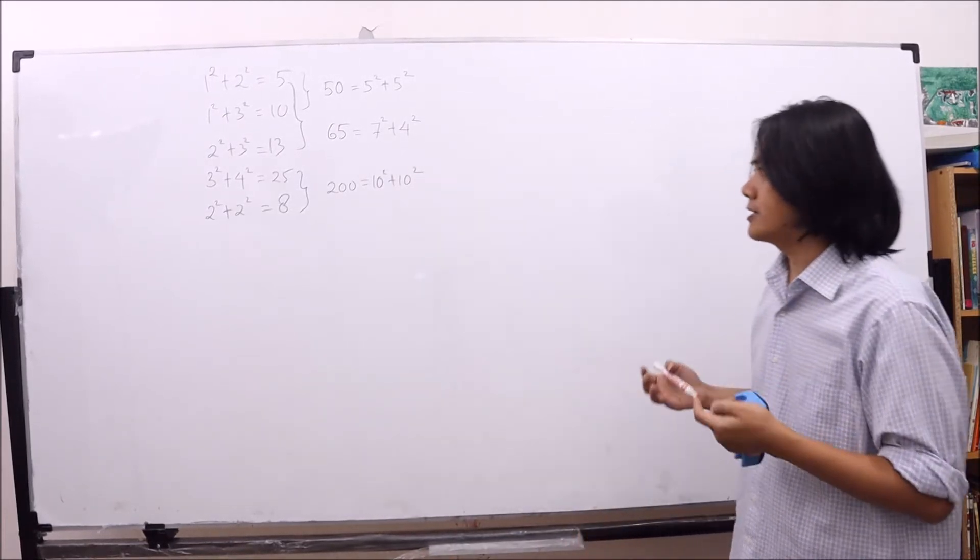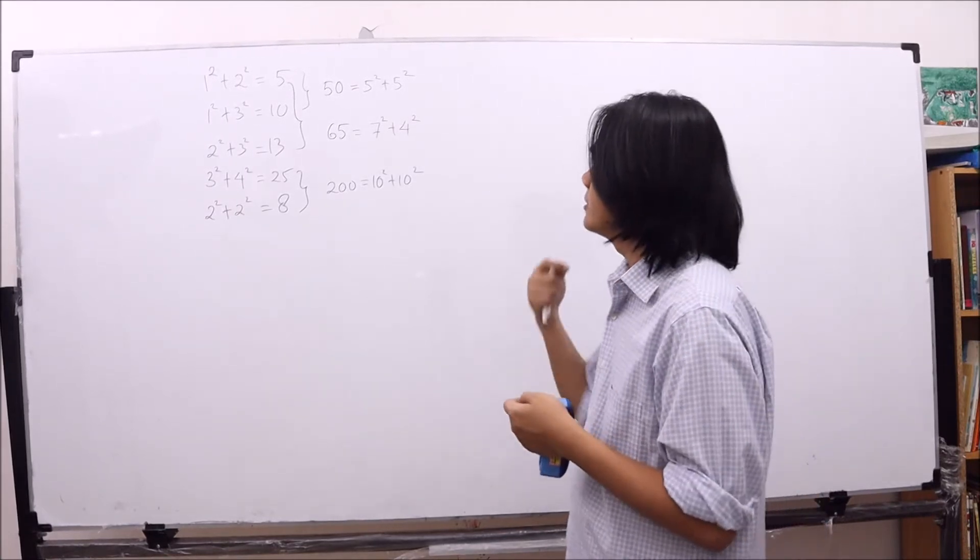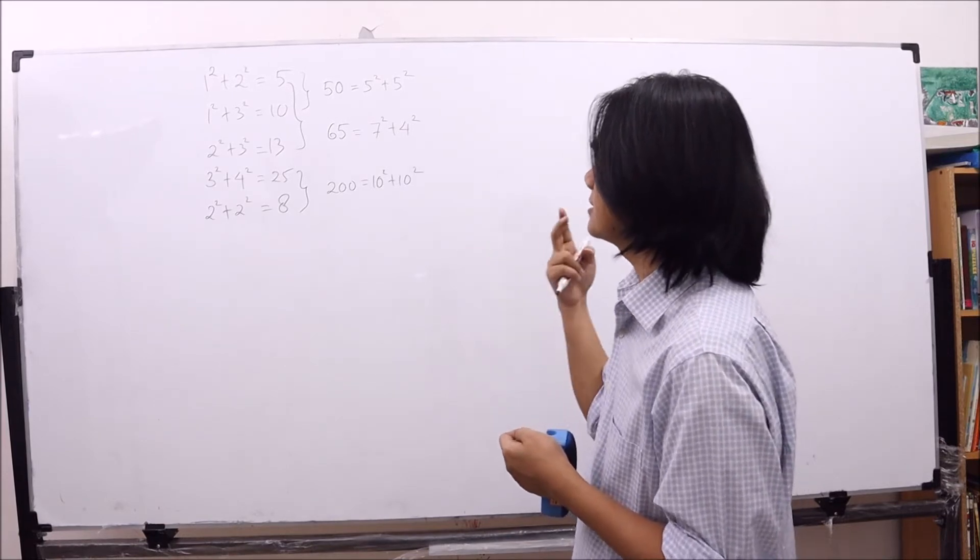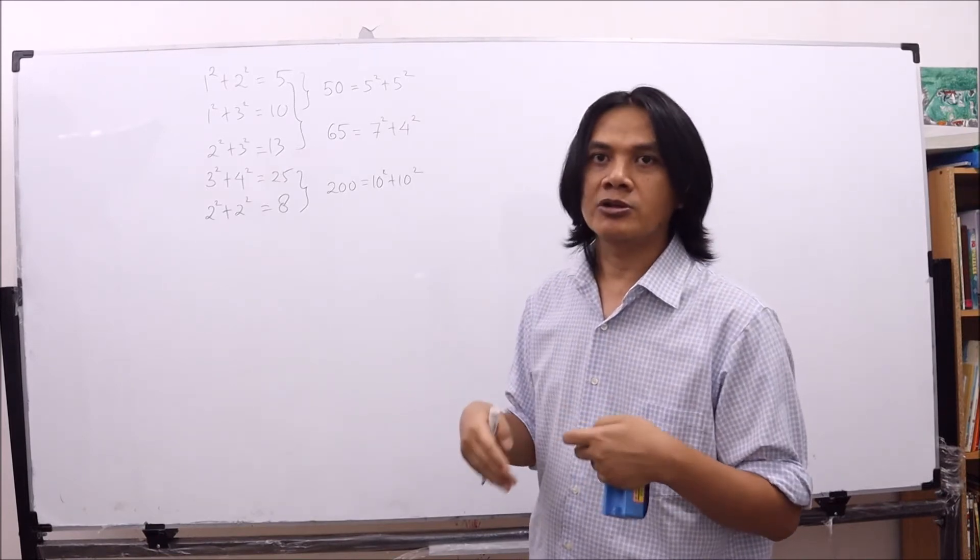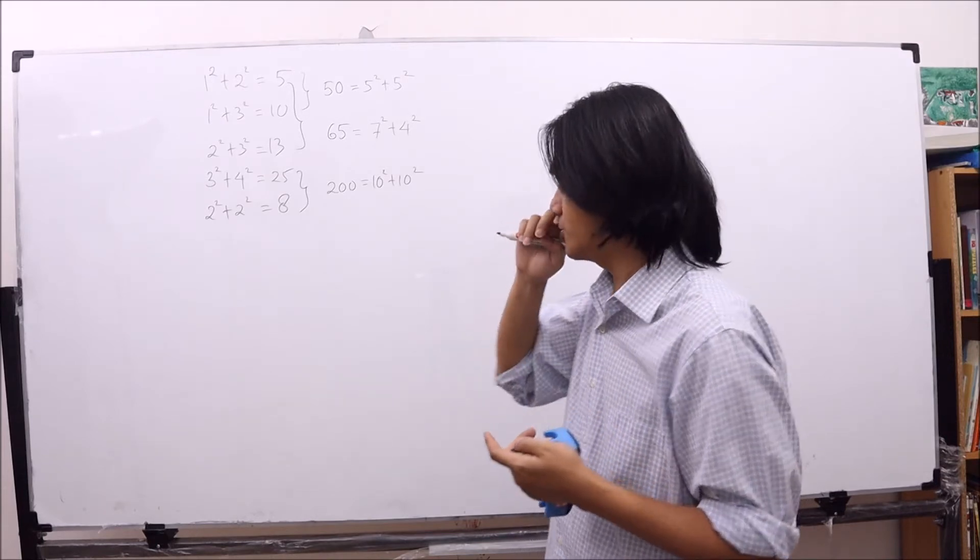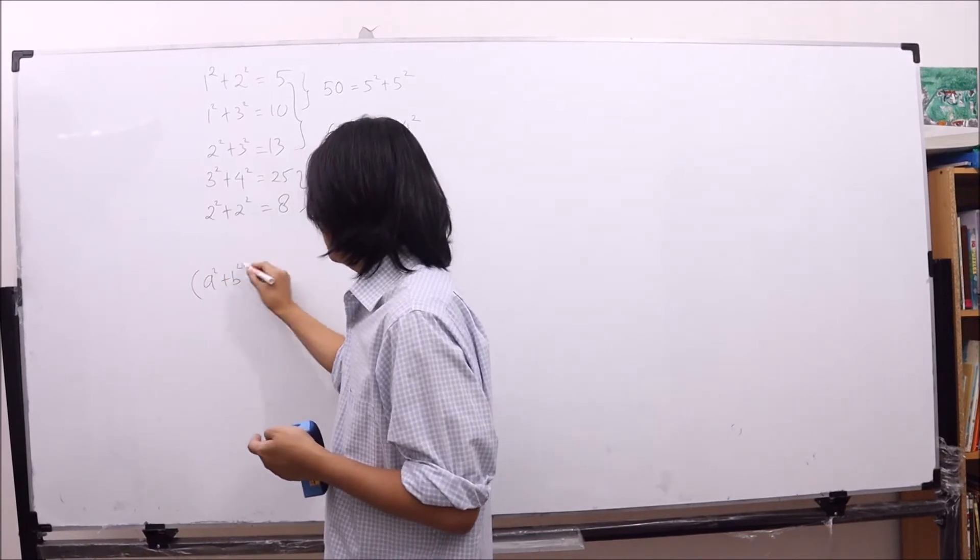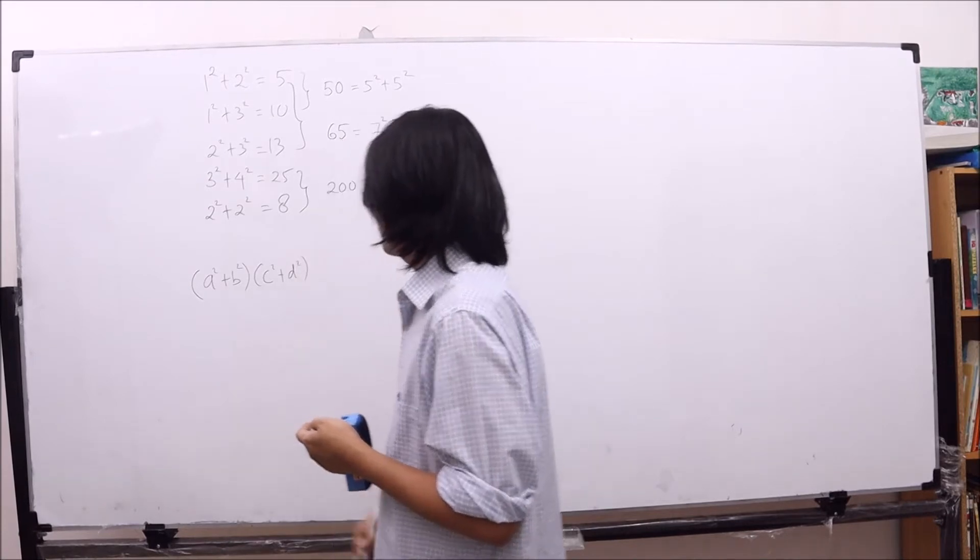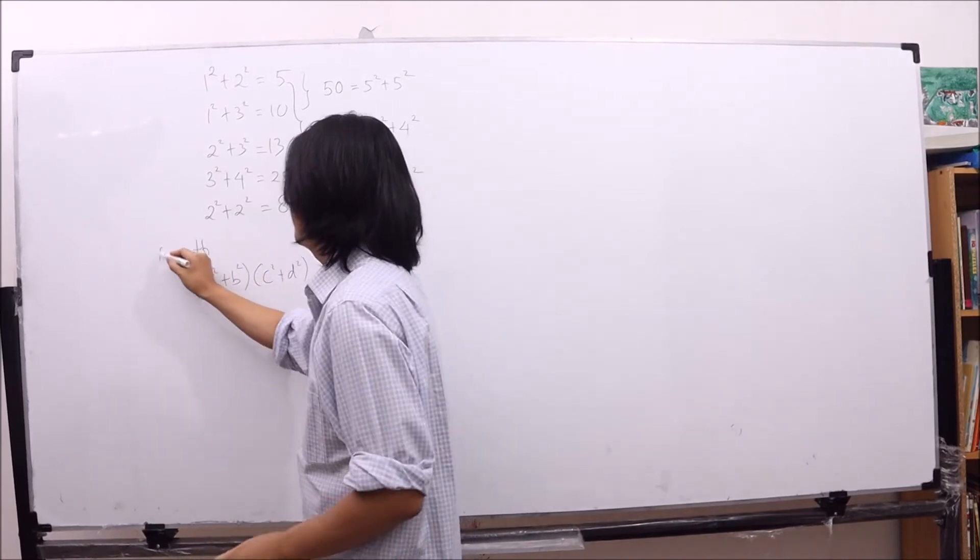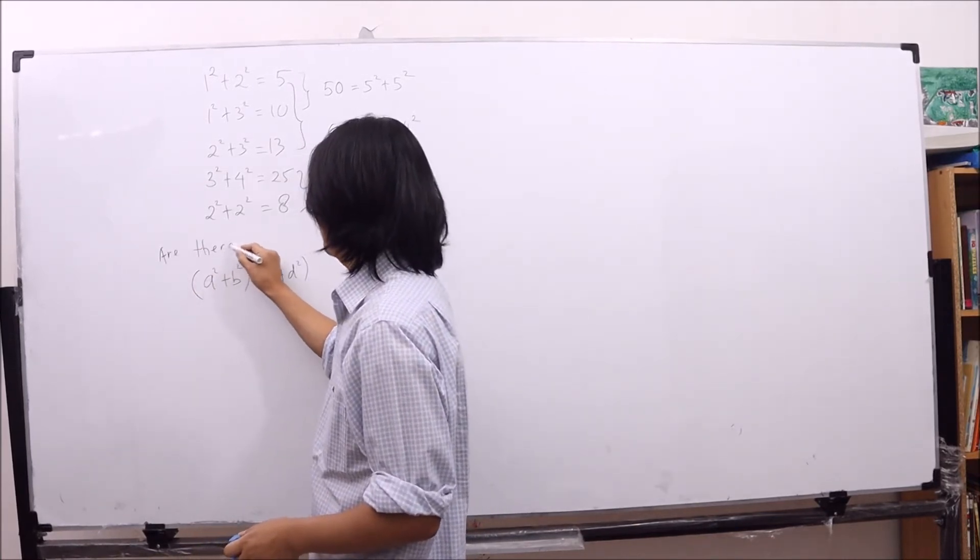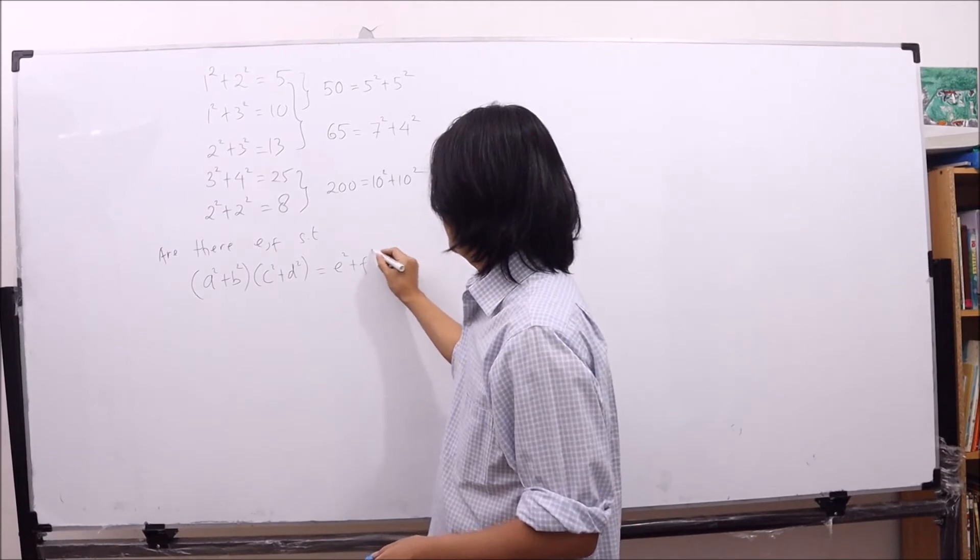So this early observation leads us to have a natural question. If we have two numbers that can be expressed as the sum of two squares, how about their product? Is it always true that their product can also be expressed as the sum of two squares? So in other words, if we have a squared plus b squared times c squared plus d squared, are there e and f such that this is equal to e squared plus f squared?